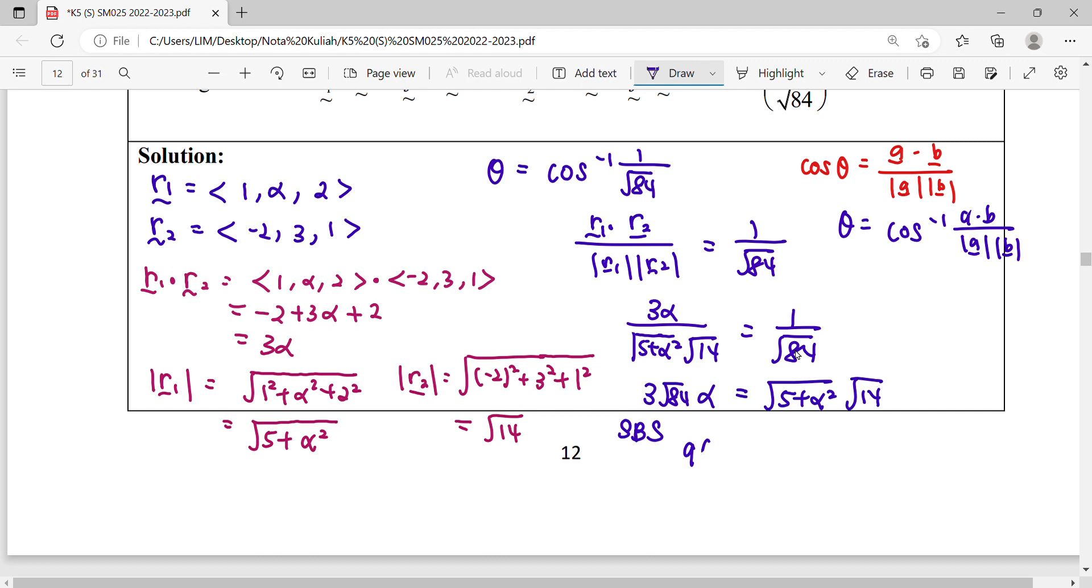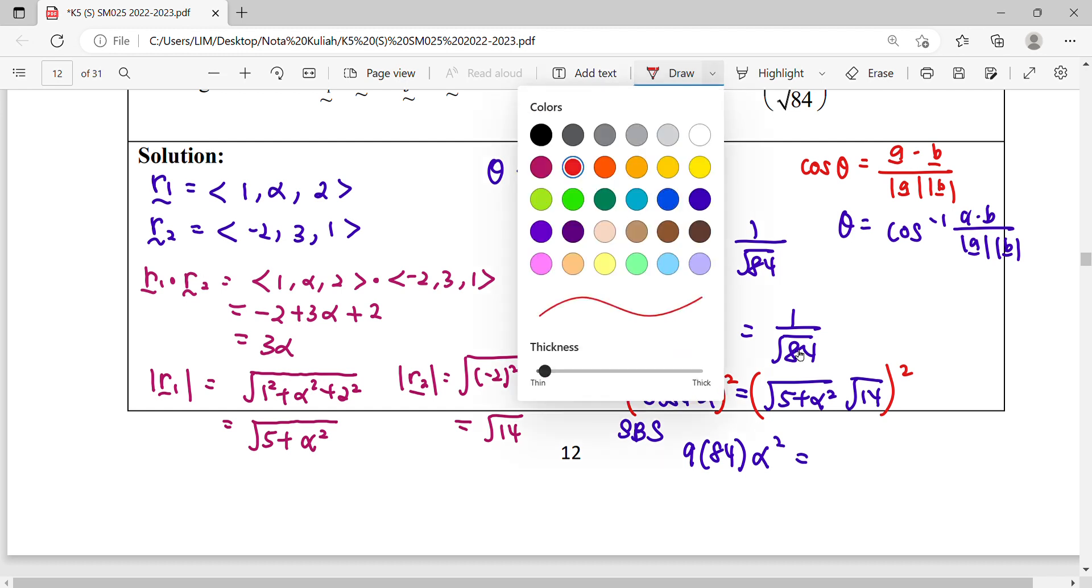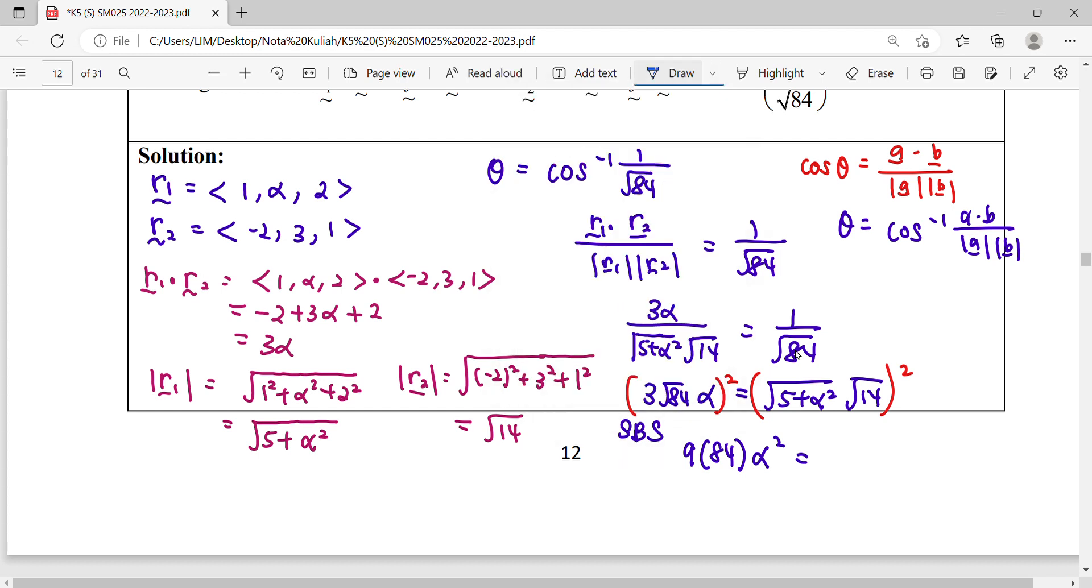There was 9 times 84 alpha square. For this square, notice that your square root can be cancelled out with this. So square root and square can be cancelled, so inside here will be 5 plus alpha square times 14. So simplify this.